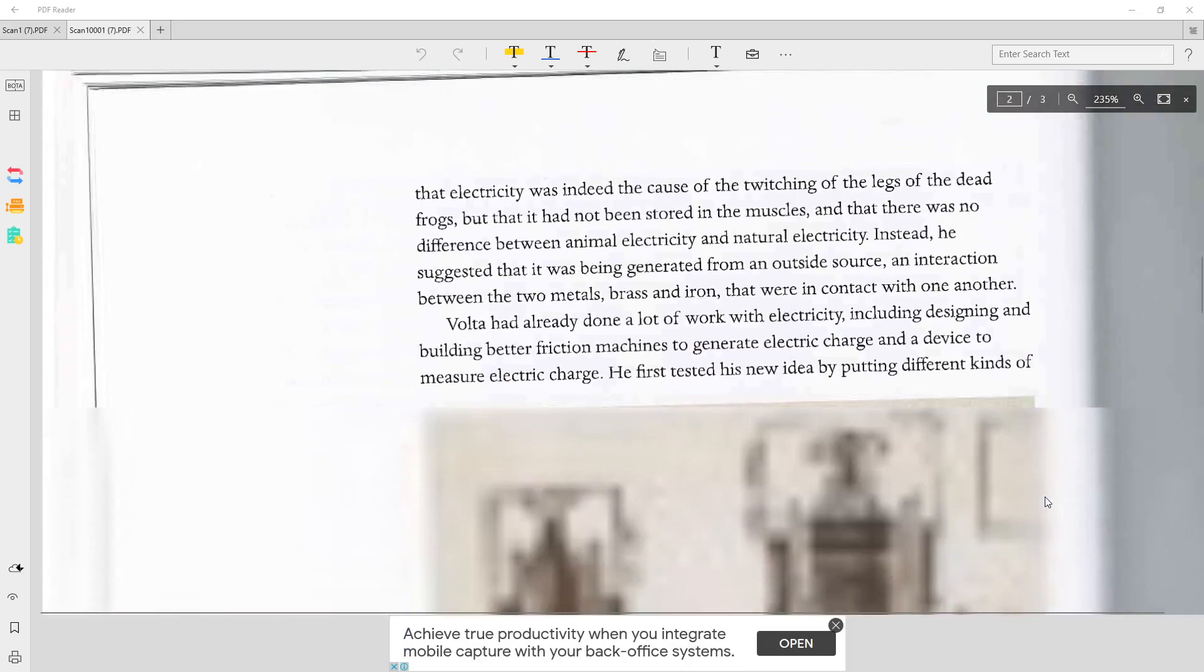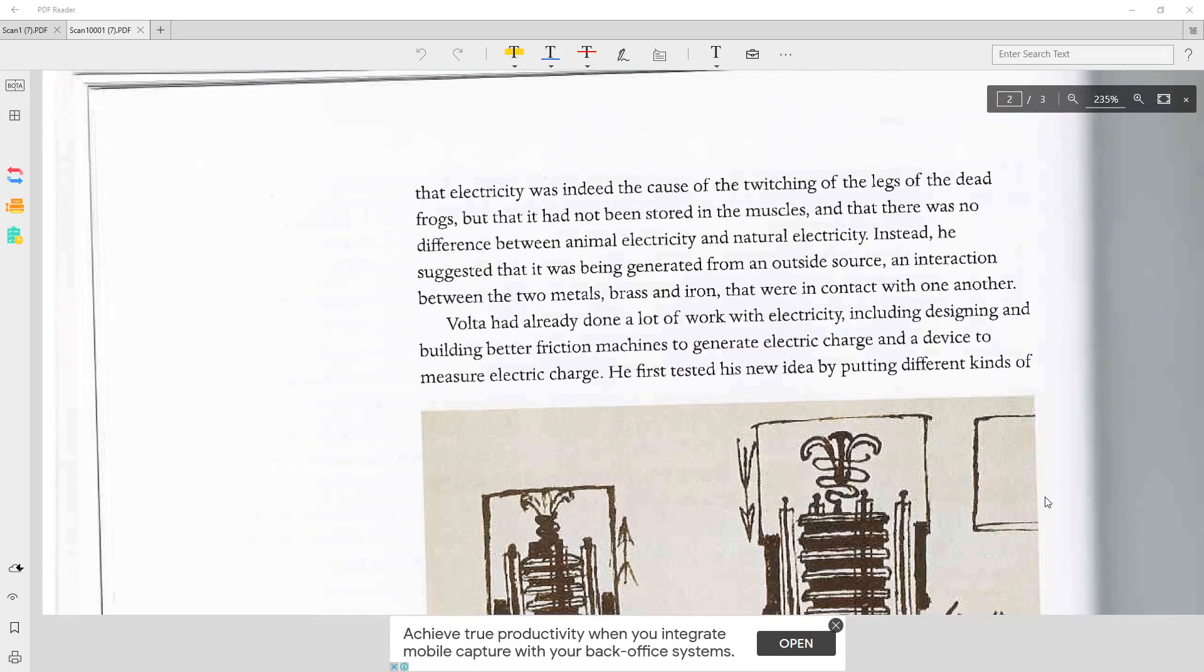Volta said that electricity was indeed the cause of the twitching of the legs of the dead frogs, but that it had not been stored in the muscles and that there was no difference between animal electricity and natural electricity. Instead, he suggested that it was being generated from an outside source, an interaction between the two metals, brass and iron, that were in contact with one another.